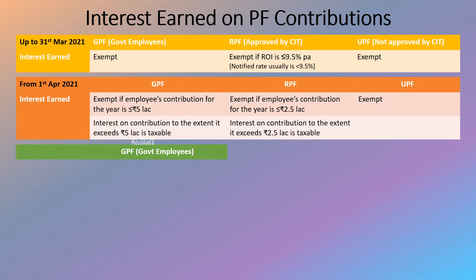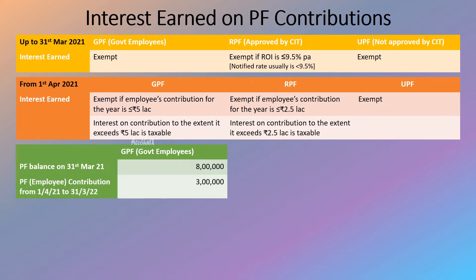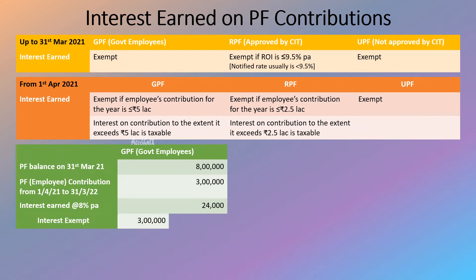To understand this better, let's consider a scenario. Suppose you are a government employee covered under GPF, your PF balance including interest on 31st March 2021 was 8 lakh, and your employee PF contribution for FY 2021-22 is 3 lakh. The notified rate of interest is 8% per annum, so interest earned would be 24,000. Since 3 lakh is within the 5 lakh threshold, the entire 24,000 interest is exempt and no interest is taxable.